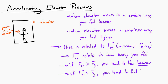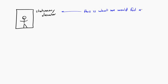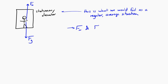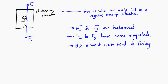This strange feeling is related to the normal force. The normal force is strongly related to how heavy you feel. If the normal force is greater than your weight, you feel heavier. If it's smaller than your weight, you feel lighter. When the elevator is stationary — our baseline — the gravitational force and the normal force balance each other out; they have the same magnitude. Our bodies are trained to feel a normal force equal to our gravitational force, just in the opposite direction.